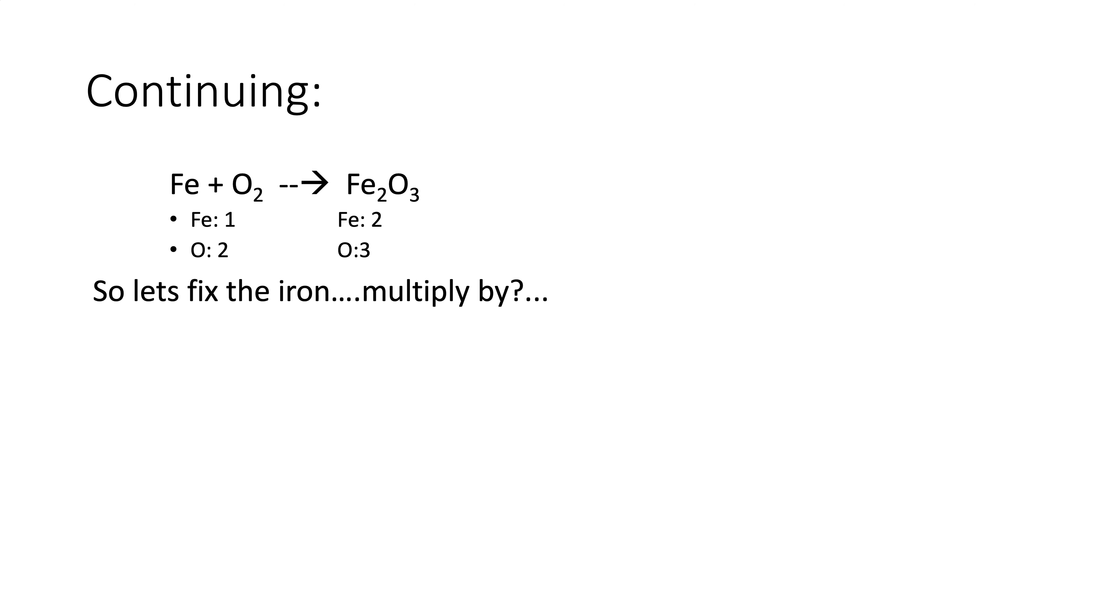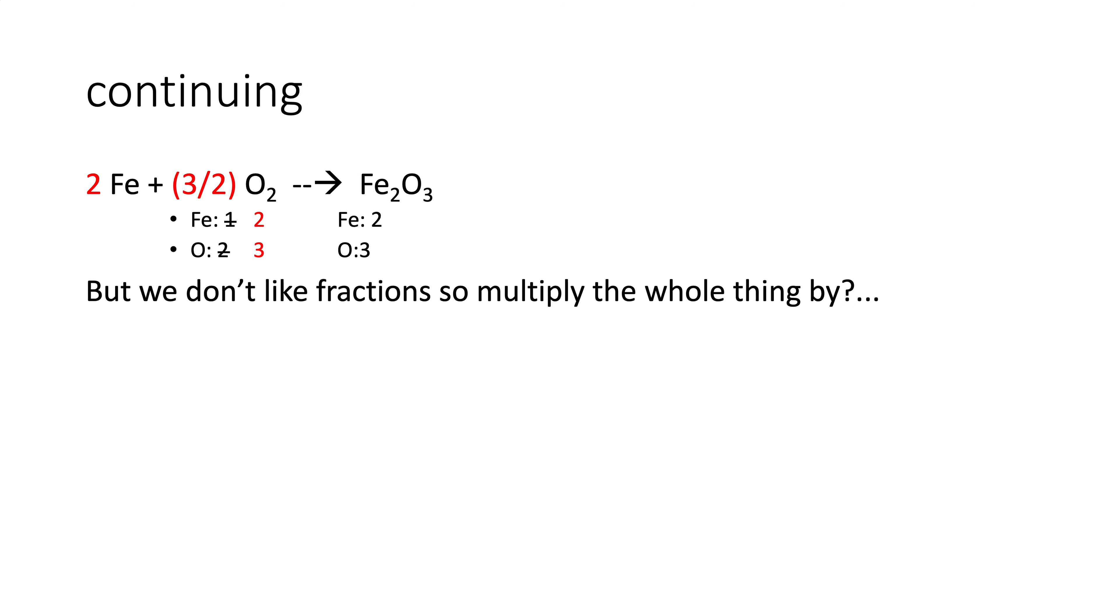Now we can fix the iron. We can multiply by a two. So we do that. Now the iron's balanced. So to fix the oxygen, let's look at what we did last time. What number times two is three? And the answer is three halves. But we don't like fractions, so we multiply the whole thing by two. The whole thing gets multiplied by two, and there is the balanced chemical equation.